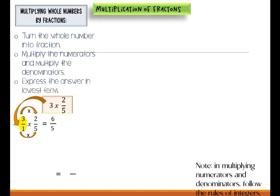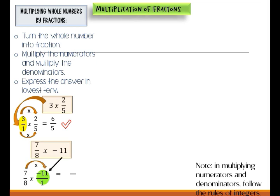6 over 5 is already reduced. Next example is 7 over 8 times negative 11. We have different signs here, so in multiplying integers, if we have different signs the answer is always negative. Turn the whole number into a fraction, so negative 11 will become negative 11 over 1. Then multiply the numerators and denominators: 7 times negative 11 is negative 77, and 8 times 1 is equal to 8. Express the answer in lowest terms: negative 77 over 8.